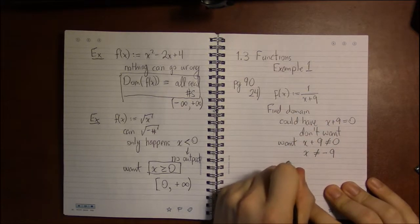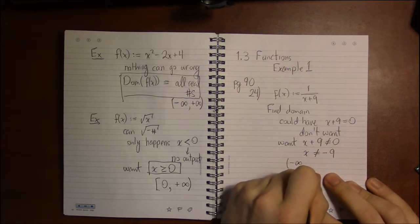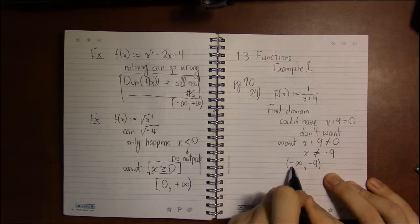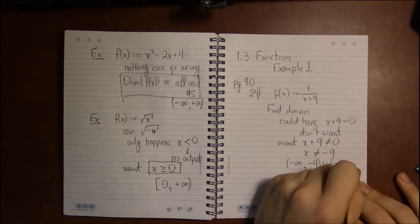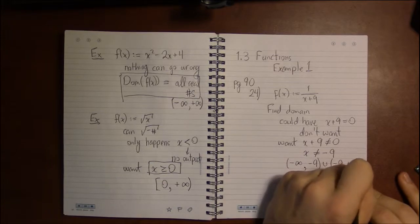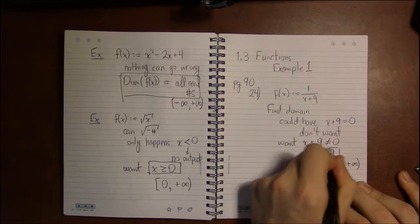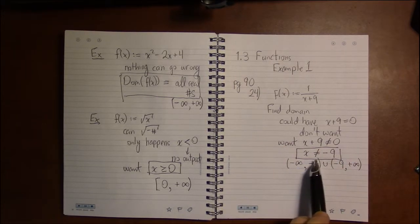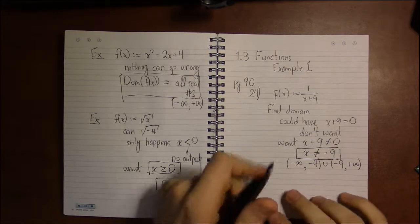In interval notation it's a bit complicated because we have to write this as all the numbers: x could be a number less than negative 9, or x could be a number greater than negative 9. But you don't have to write it that way. It's perfectly all right to write this as x does not equal minus 9.